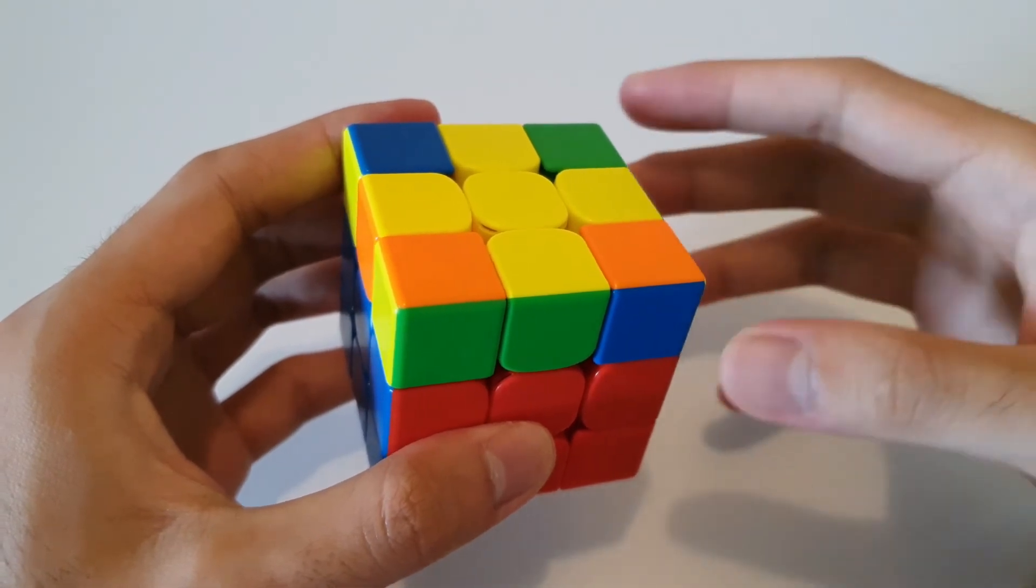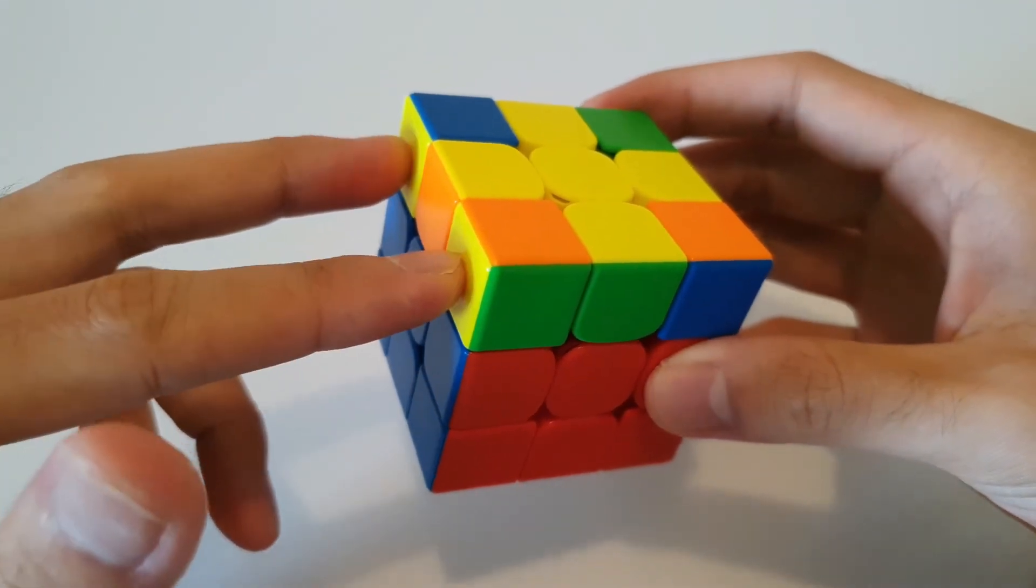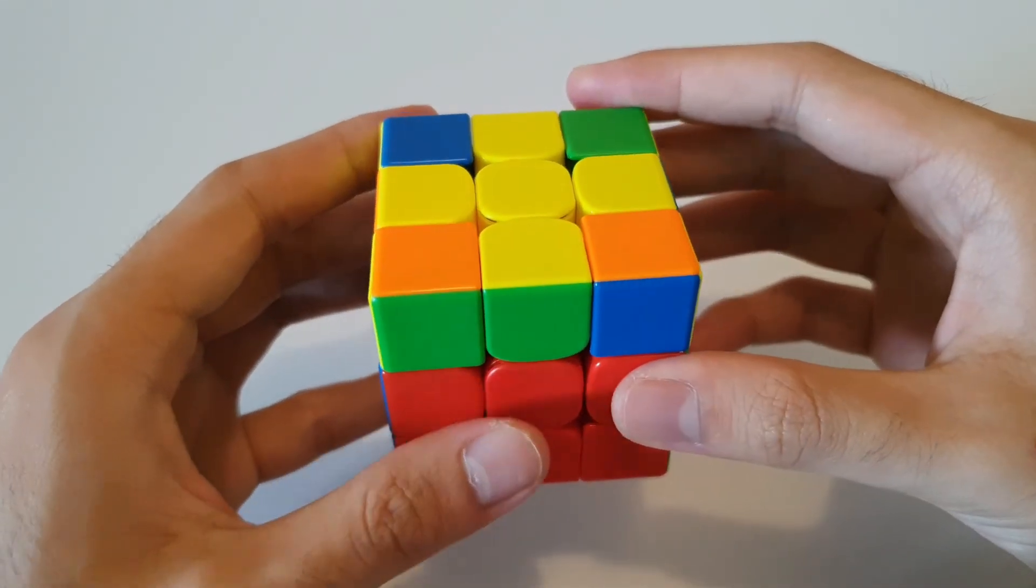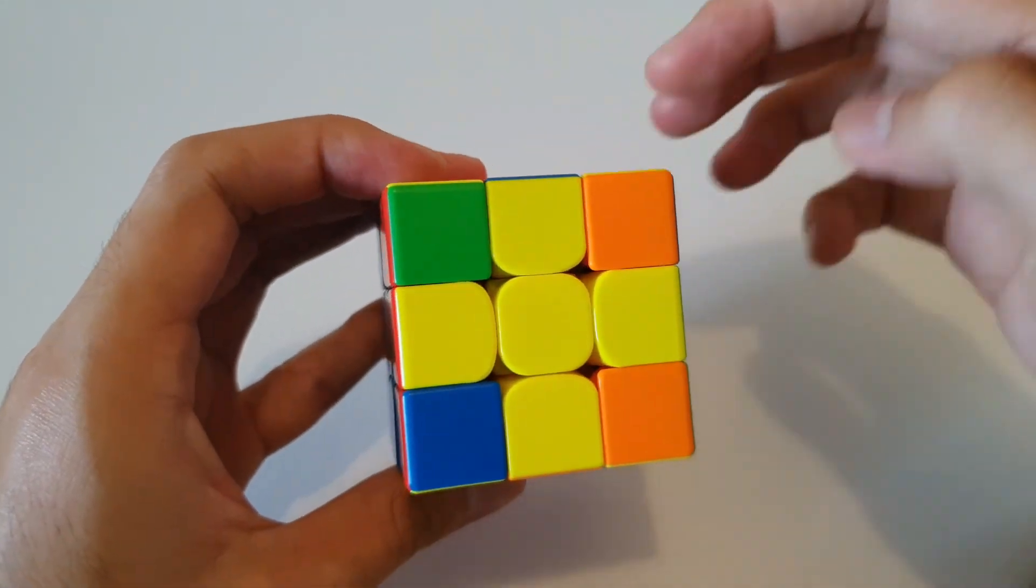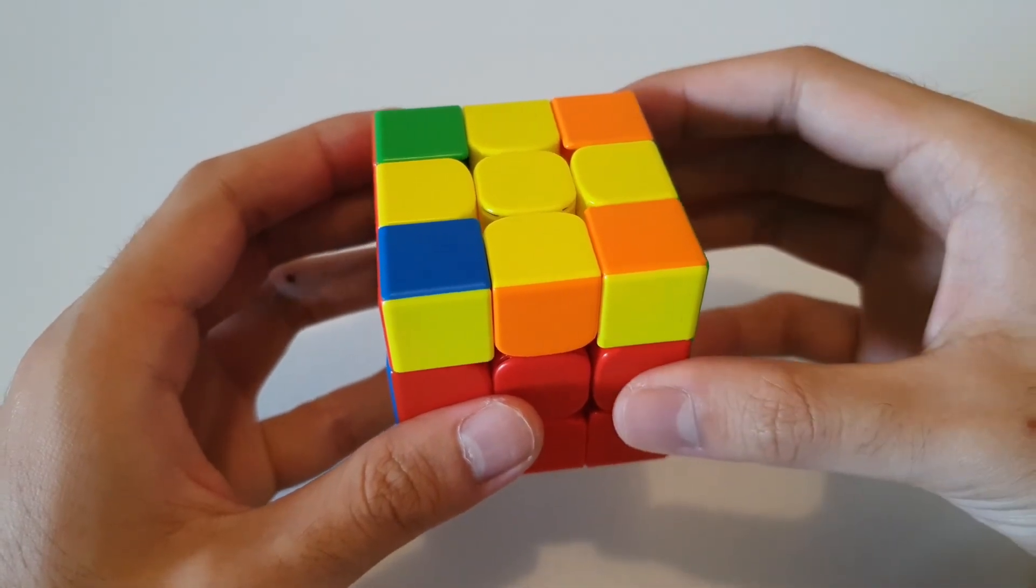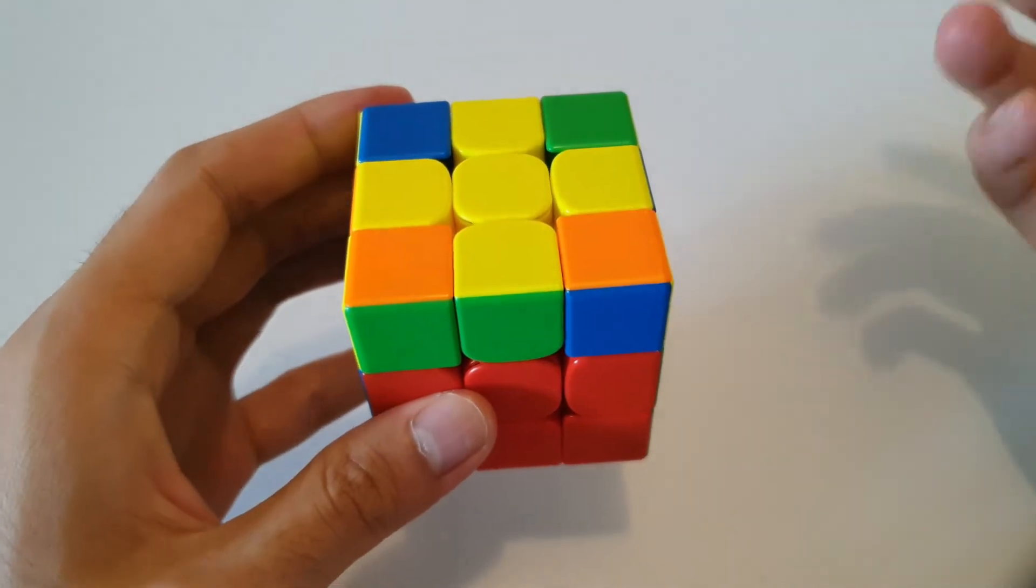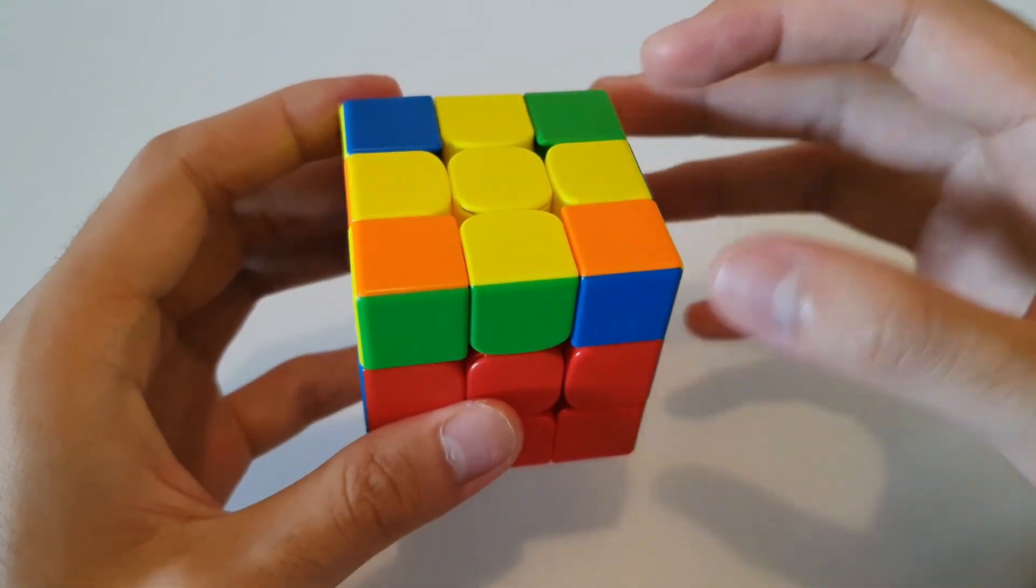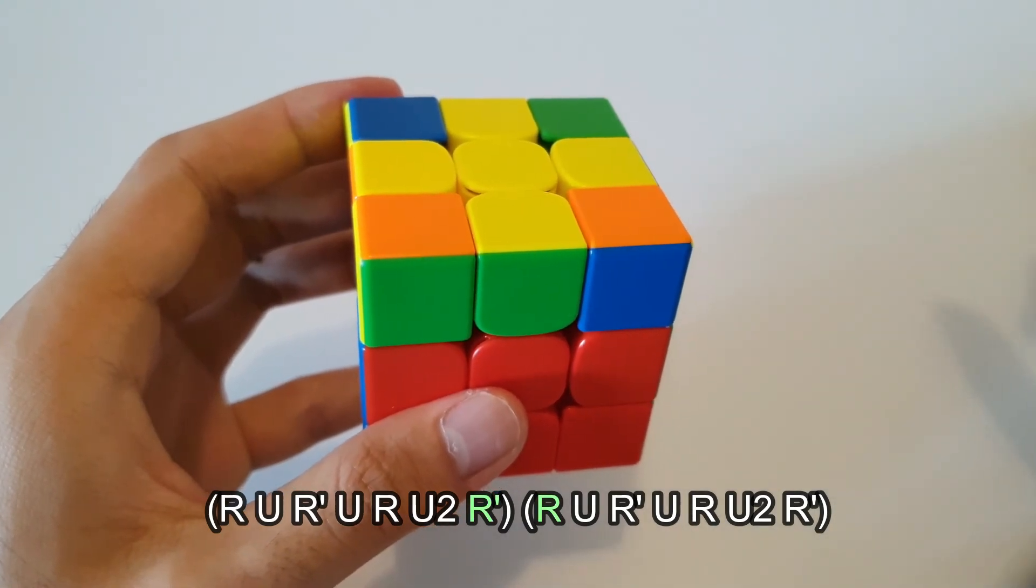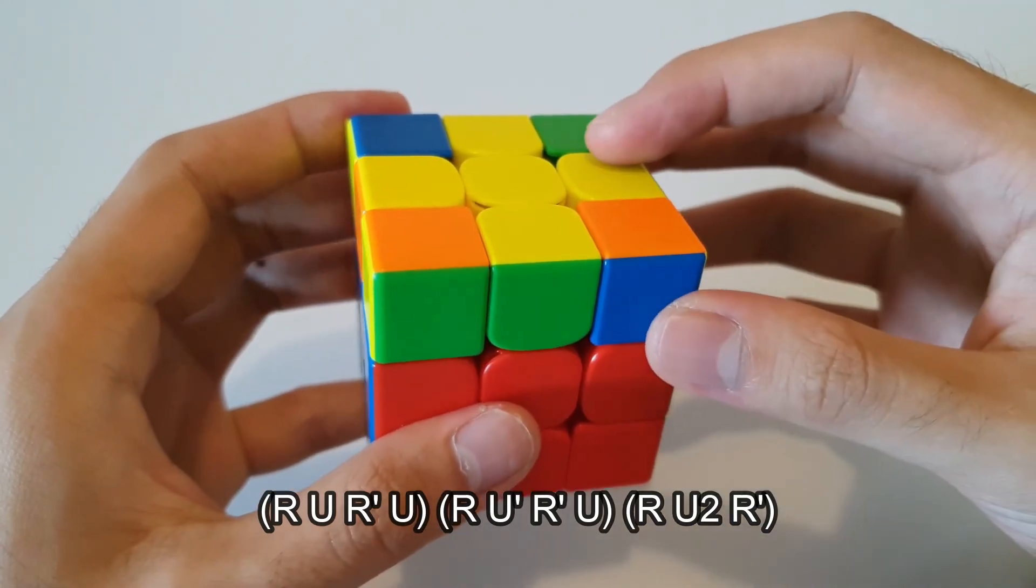The final case that you could possibly get is this case. Once again, there's no corners oriented, however, in this case, there are two sets of headlights pointing in either direction. So this is otherwise known as the H case, because once again, if you extend the yellow corners out, it kind of looks like an H. So for this H case, we actually want to hold the H so that it's horizontal, so that it actually no longer looks like an H. And then from this angle, it can be solved by two Sunes. But because the two Sunes kind of cancel each other out in the middle, it's actually a bit shorter than two Sunes, and it goes like this.